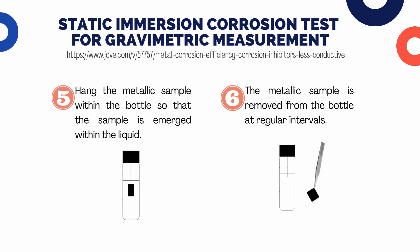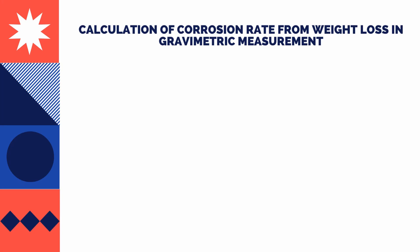Remove the metallic sample from the bottle at regular intervals for rinsing with about 25 milliliters of acetone, using pulp tissue to remove any excess corrosion products from the surface. Then weigh the sample to four decimal places and return the sample to the bottle. When equilibrium is achieved within the metal-liquid system, terminate the experiment. Finally, the mass changes of the metallic sample can be used to calculate the corrosion rate.